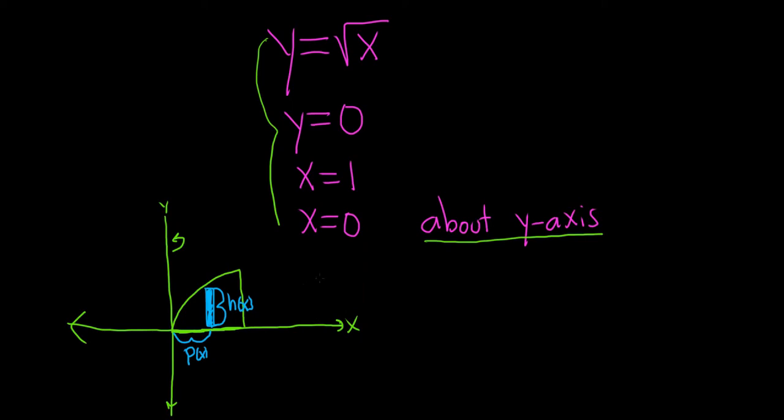So in this case, h of x is simply the square root of x. That's because this function here is the square root of x. p of x will vary as we integrate with respect to x. And this distance here is simply x. So p of x is just x.